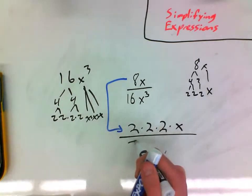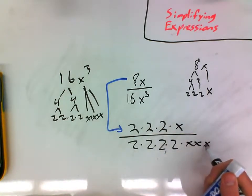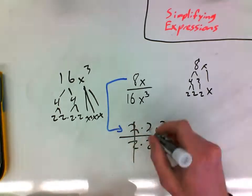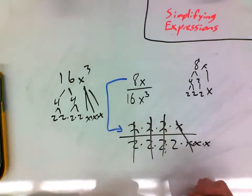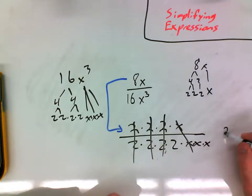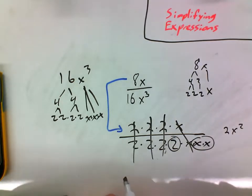So the top just becomes 2 times 2 times x, and the bottom is this. And so watch what happens. The 2s cancel, the 2s cancel, the 2s cancel, the x cancels. It would be a really common response people would say is I have a 2x squared left, and so they leave the answer like that.